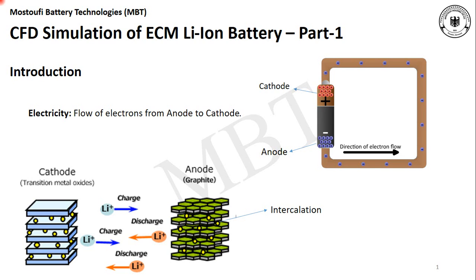We start with the definition of electricity, which is the flow of electrons from anode to cathode. As you may already know, a battery has two terminals. The negative one is called anode and the positive one is called cathode. By definition, the electrons go from the negative terminal to the positive terminal.